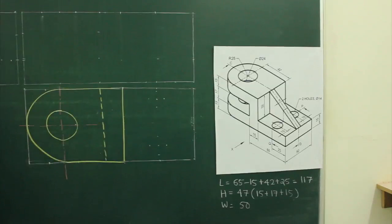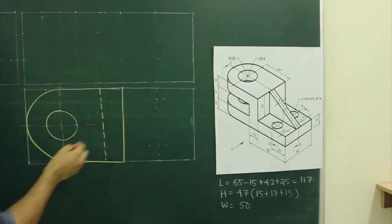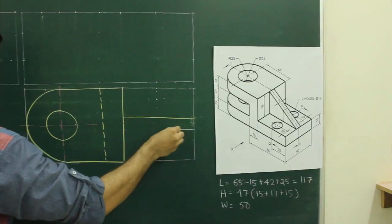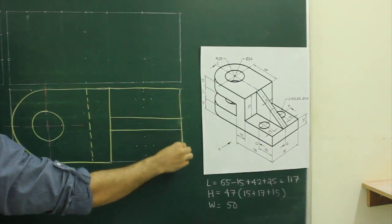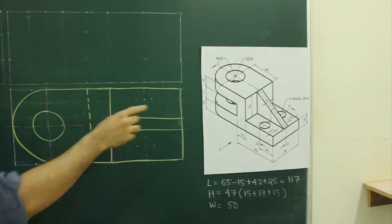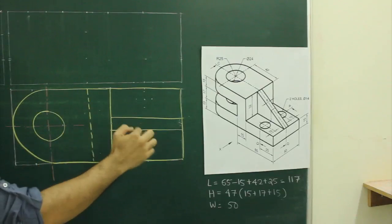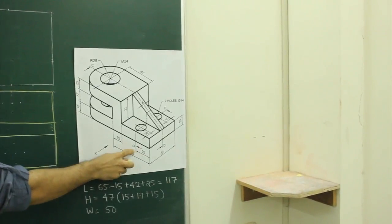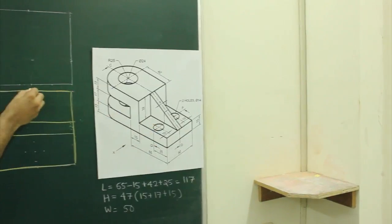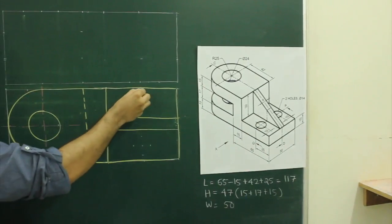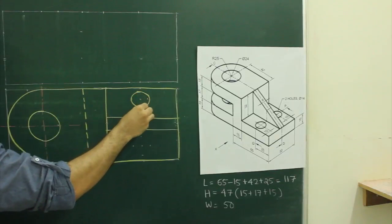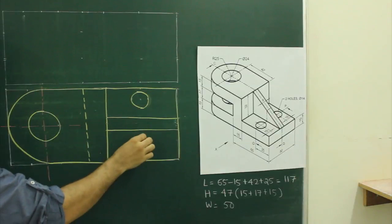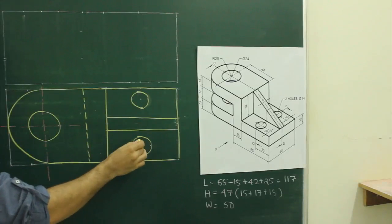We will take the center point and take 4 up and 4 down, because it is 8, and we will draw a horizontal line from here. We will draw this boundary arc. Now we need to draw a circle. They have given 25 and 10 inside. So we will take 25 from here and go inside by 10, and we will draw a circle of diameter 14, so radius would be 7. So we are done with the top view.